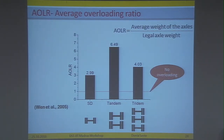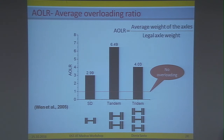I performed an analysis to find the average overloading ratio factor as per the Venn et al. procedure. The average overloading ratio is the ratio of the average weight of the axles divided by the legal axle weight. It is plotted here, and we can see that tandem axles are almost 6.5 times overloaded compared to the legal axle limit.